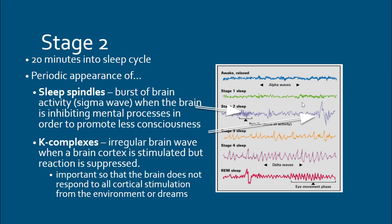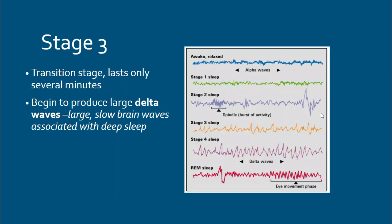Stage two also lasts about 20 minutes. Two important things happen: sleep spindles and K-complexes. Sleep spindles are bursts of brain activity where the brain inhibits mental processes to promote deeper sleep — the brain is suppressing urges to return to wakefulness and pushing you into deeper sleep. K-complexes are irregular brain waves where the cortex is stimulated but suppressed. For example, if someone lightly touches your arm while you sleep, K-complexes fire but keep you from waking up fully.